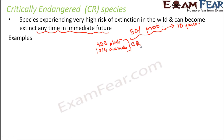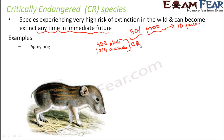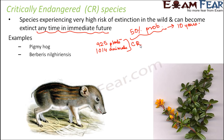Examples of critically endangered species include the Pygmy hawk and Berberis nilgiriensis. Berberis nilgiriensis is a plant species found near the Nilgiris, which is reflected in its name.